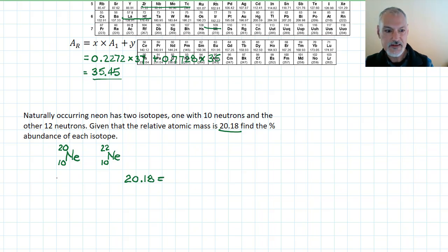well, let's say that x is the fraction that exists in this variety. So I would have x times 20. And the fraction that exists in this variety I'll call y. And so I'll have y times 22.